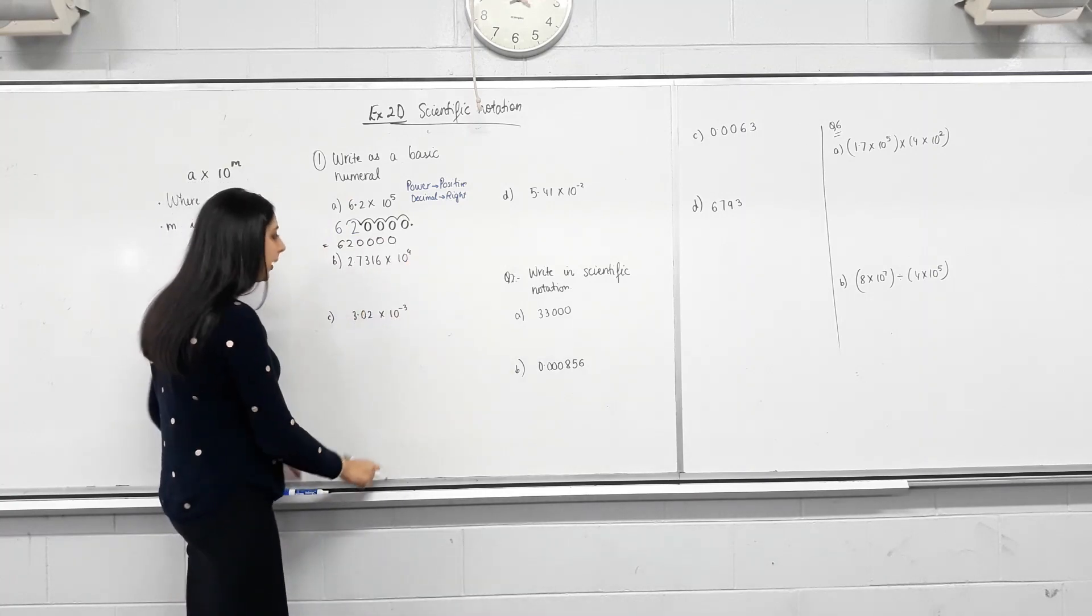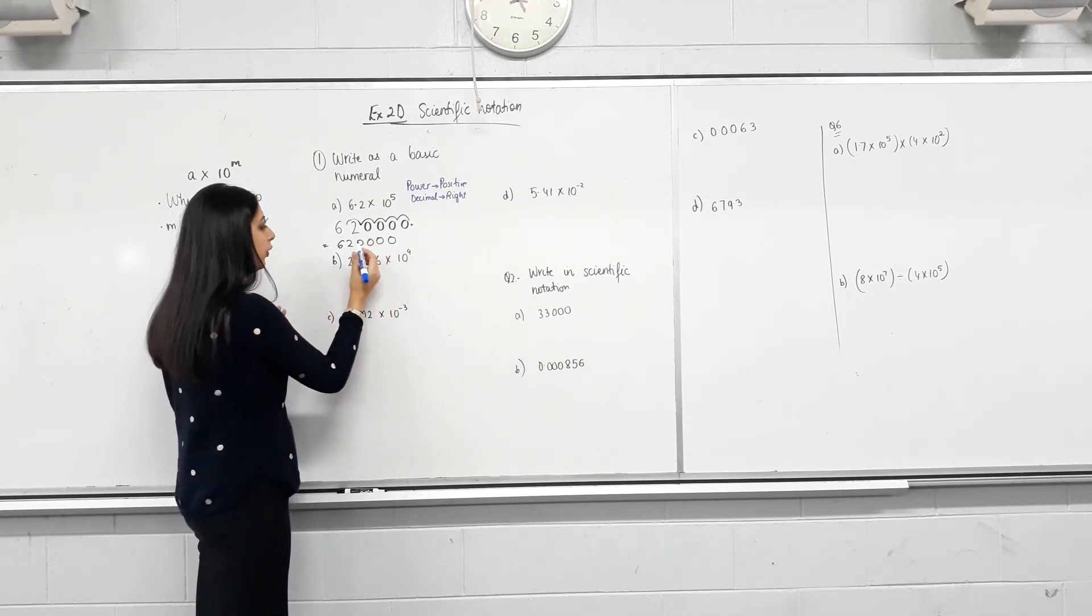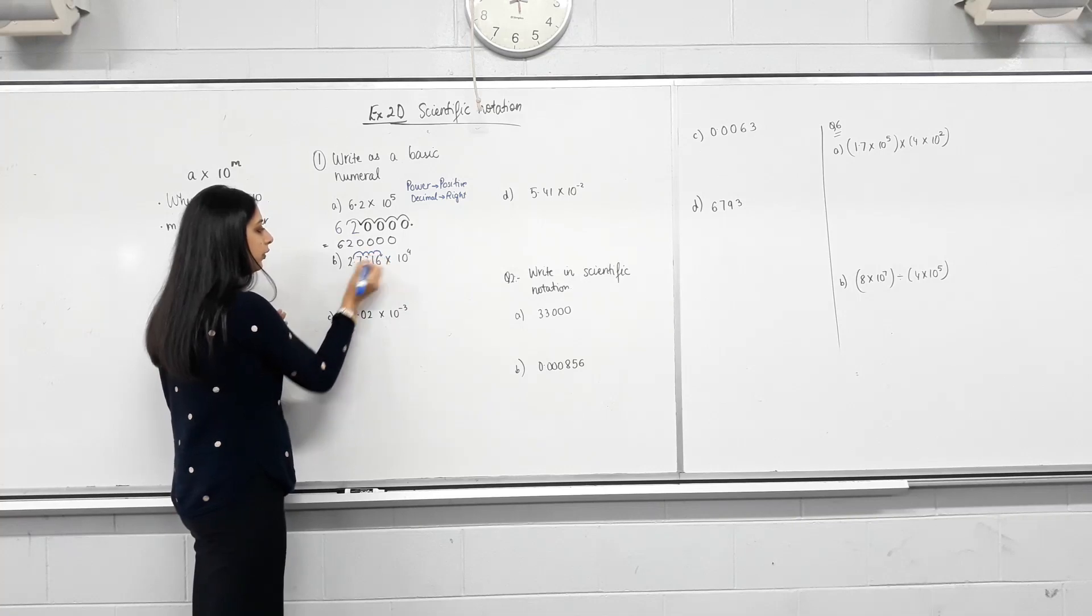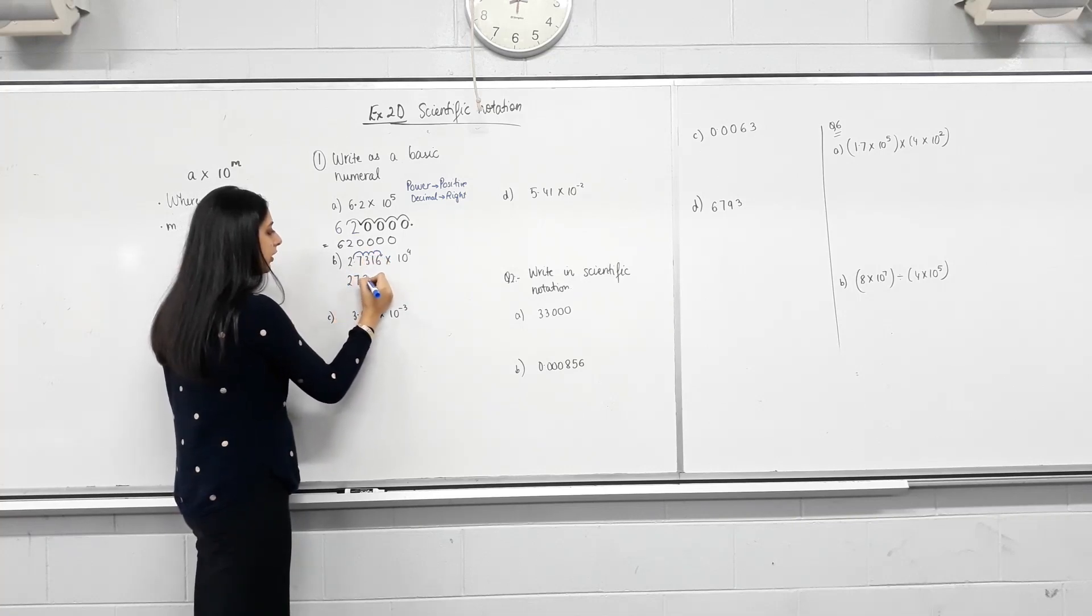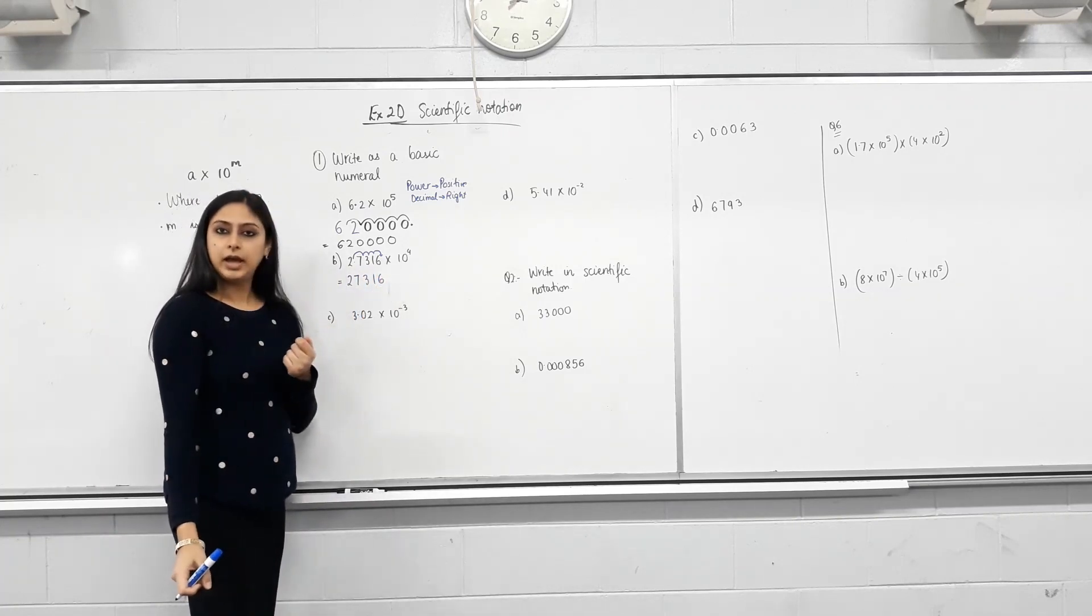Next one. Again, is the power positive? Yeah. So that means we need to move the decimal how many places to the right? Four. Four. So the decimals here. One, two, three, four. So we get 2, 7, 3, 1, 6. Do I need to write the decimal here? No. Because there's nothing after. Happy?